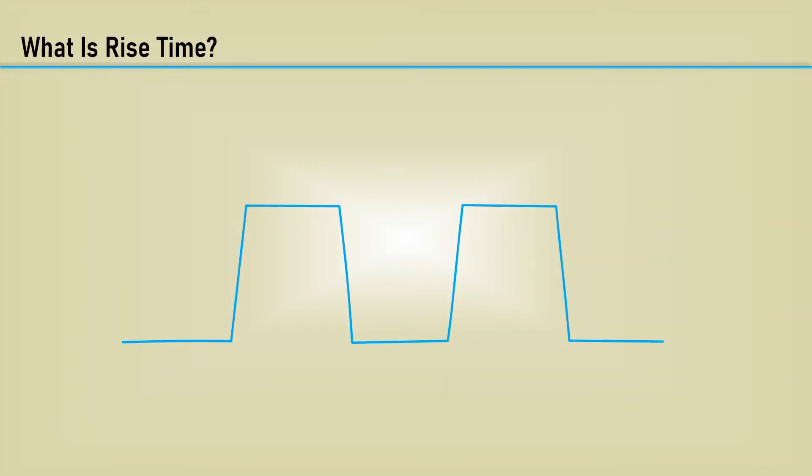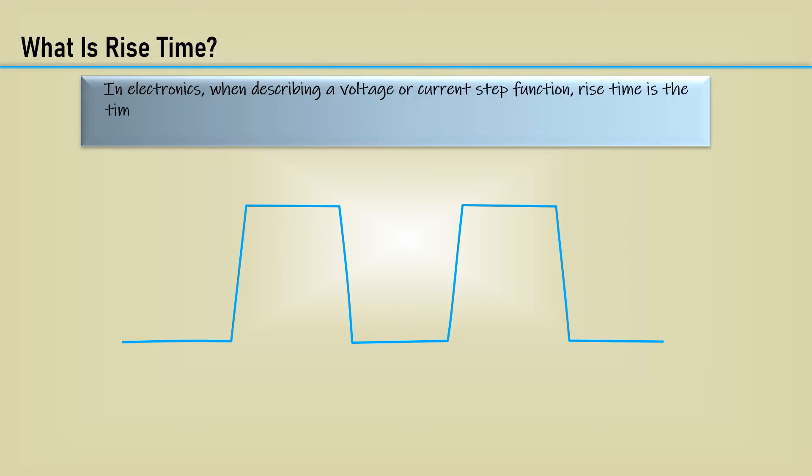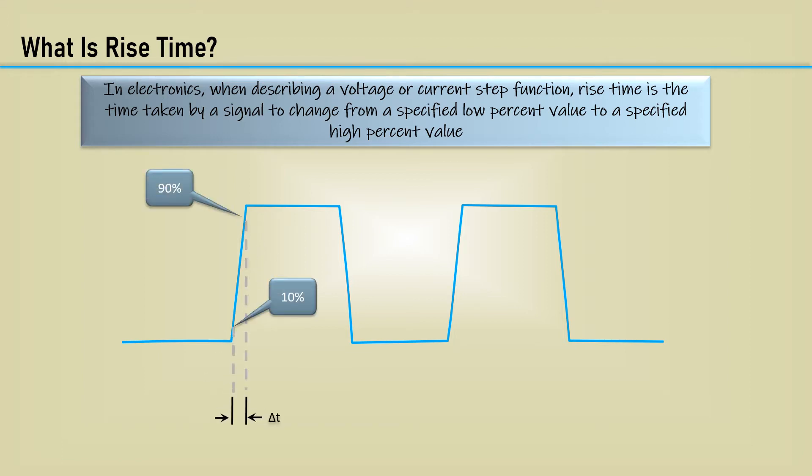Let's begin with a little review and clarification. What is rise time? In electronics, when describing a voltage or current step function, rise time is the time taken by a signal to change from a specified low percent value to a specified high percent value. It's usually from 10% to 90% of the signal's amplitude.